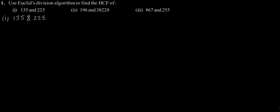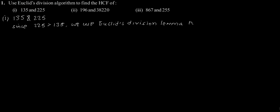We start with the larger integer. Since 225 is greater than 135, we use Euclid's division lemma to get 225 = 135 × 1 + 90.